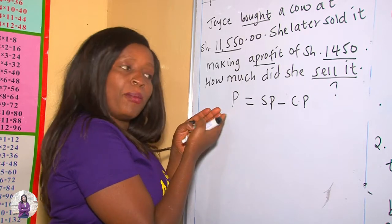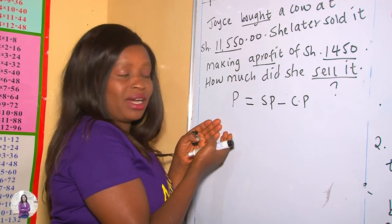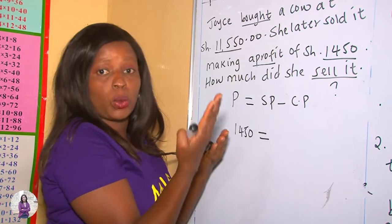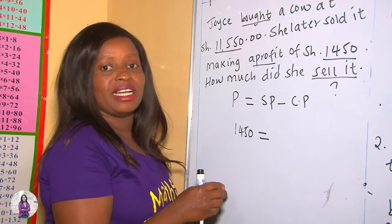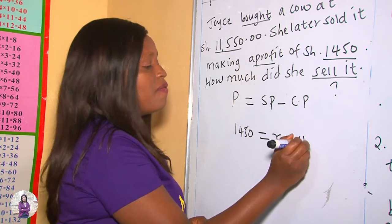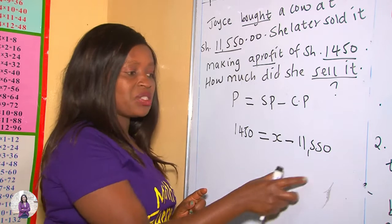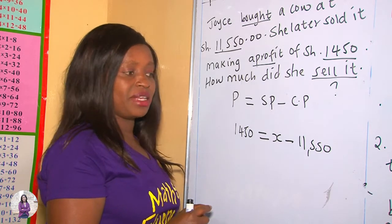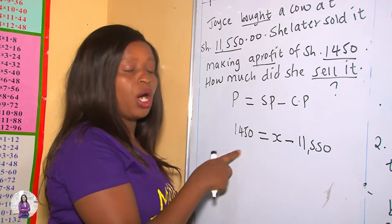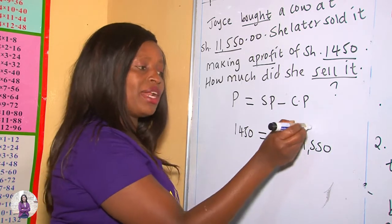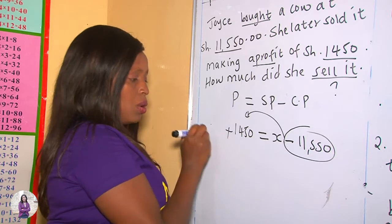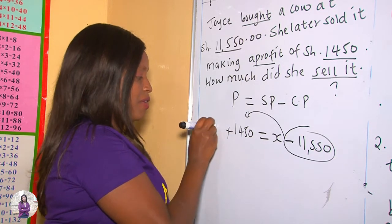So we put what we have into the formula: 1,450 equals X take away 11,550. Once you reach this point, you apply the rules of algebra — you put like terms together. We have one unknown X and the numbers. Since 11,550 is negative on the right side, the moment you cross the equal sign it becomes addition. So we get X equals 1,450 plus 11,550.